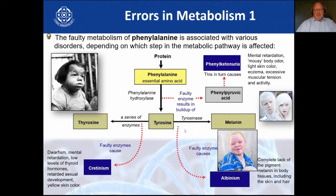If the enzyme tyrosinase does not work, you get albinism — a complete lack of the pigment melanin in the body tissues, including the skin and hair. This person shown is actually an African person, so his parents could be Black or one could be albino — most likely they passed on this gene. Here you also have Caucasian albinos. This person is supposed to be Black but cannot make any melanin.